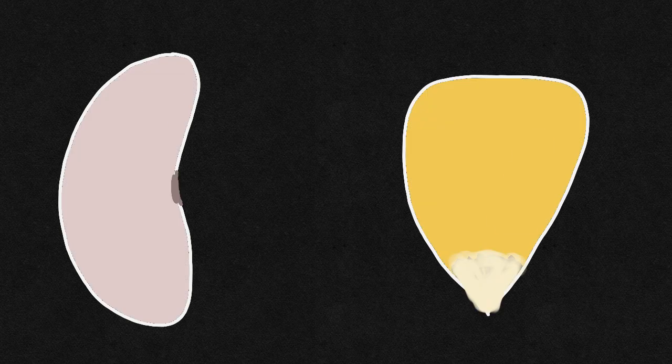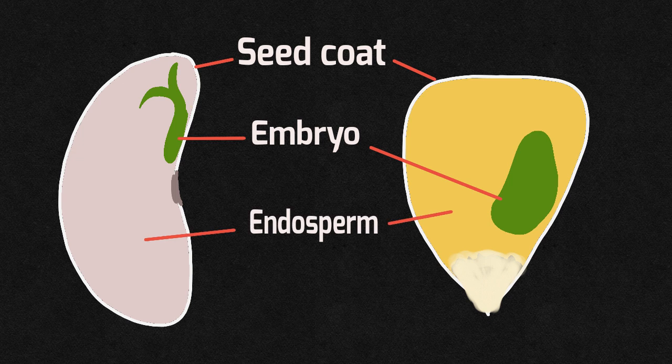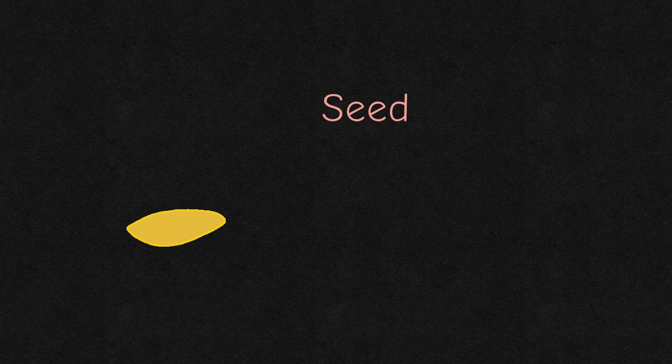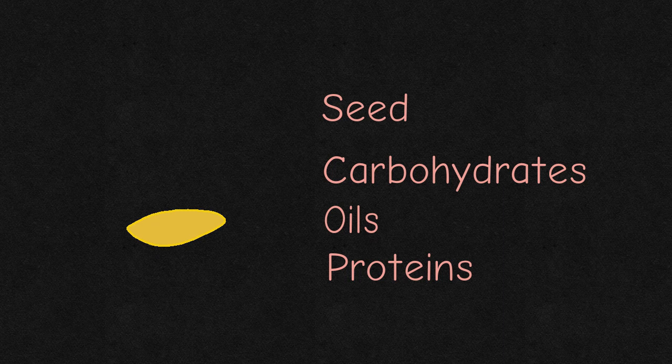A seed is a mature fertilized ovule consisting of a seed coat, embryo, and endosperm. Seed storage organs contain substantial quantities of two or more major reserves: carbohydrates, oils, and proteins.